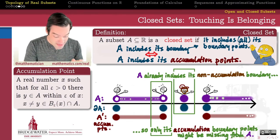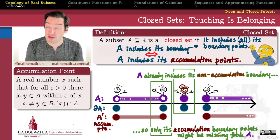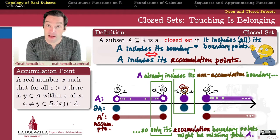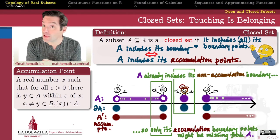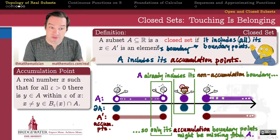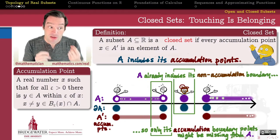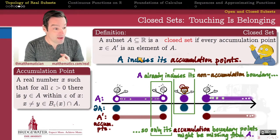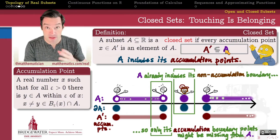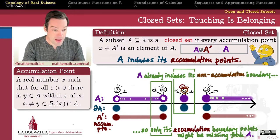The definition of accumulation point is nicer to work with than the definition of boundary. With boundary, we had to check two things: that the point was not interior to A, and also not interior to A's complement. The definition of accumulation point is a simpler single check. So we'll call a set closed if every one of its accumulation points is already an element of A — that is, if the derived set of A is a subset of A.